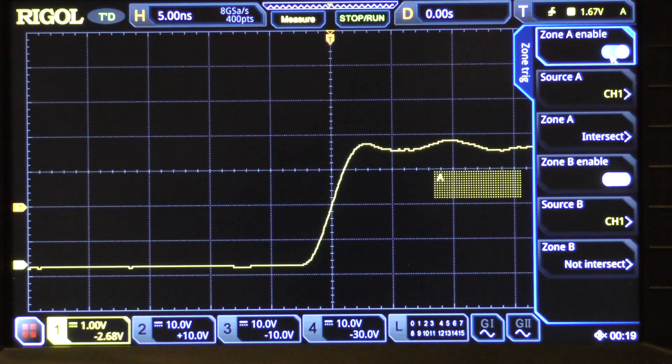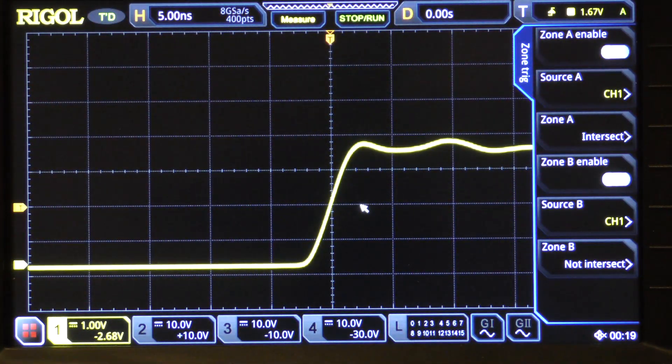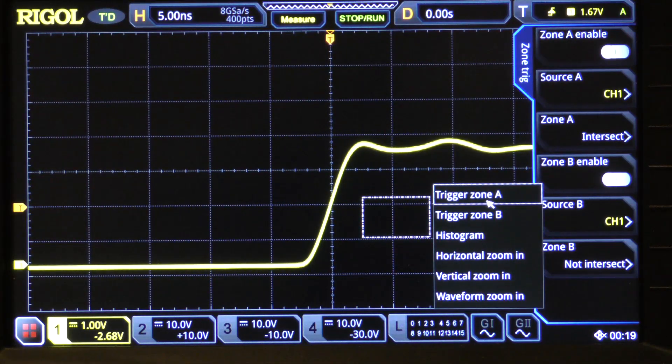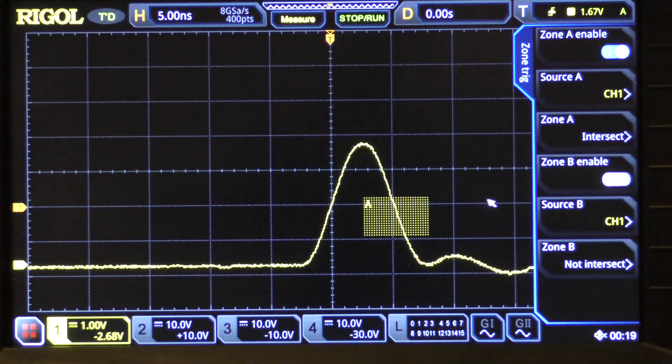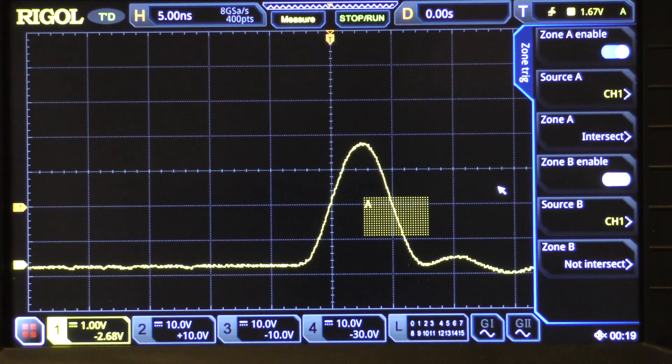We're going to turn this off, and we're going to draw one down here now, and turn it on. And, this time we guessed right. So, this gives you an idea of how the zone trigger can be used on the MSO5000, as well as where it's useful and where it's not.